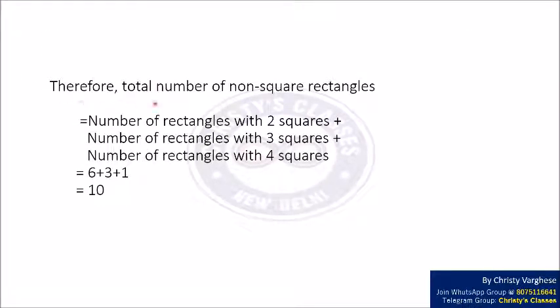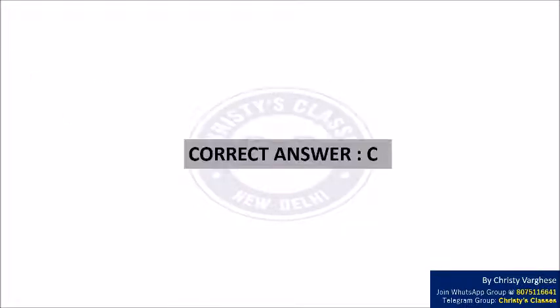So the total number of non-square rectangles is number of rectangles with 2 squares plus number of rectangles with 3 squares plus number of rectangles with 4 squares. That is 6 plus 3 plus 1, which equals 10. So the correct answer is option C.